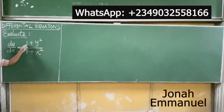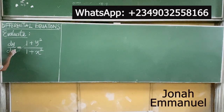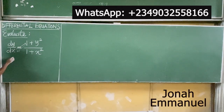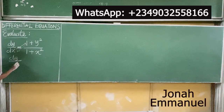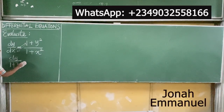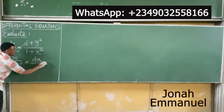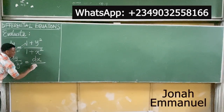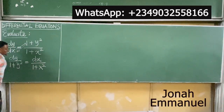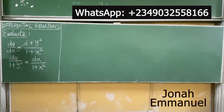This 1 plus y squared comes down. The x goes up here. In essence, I'll be having something that looks like y all over 1 plus y squared is equal to x all over 1 plus x squared.